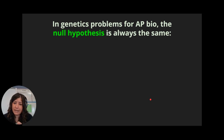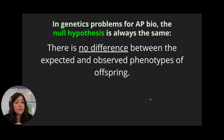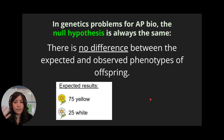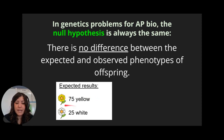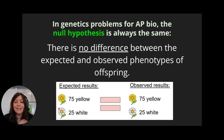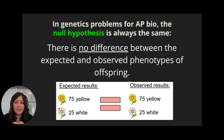In the genetics unit, the null hypothesis we're going to be using is always the same: there's no difference between the expected and observed phenotypes for offspring. For example, if we're doing a Punnett square and we expect out of a hundred offspring that 75 will be yellow and 25 will be white, the null hypothesis is that our observed results are exactly the same — that when we actually perform the cross, we got 75 yellow and 25 white. In other words, our Punnett square was an exactly perfect prediction.